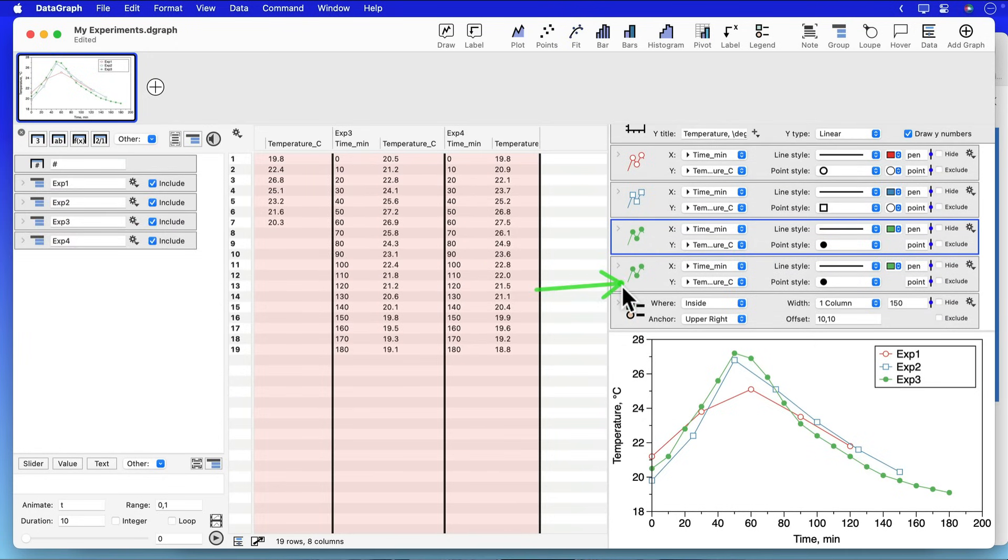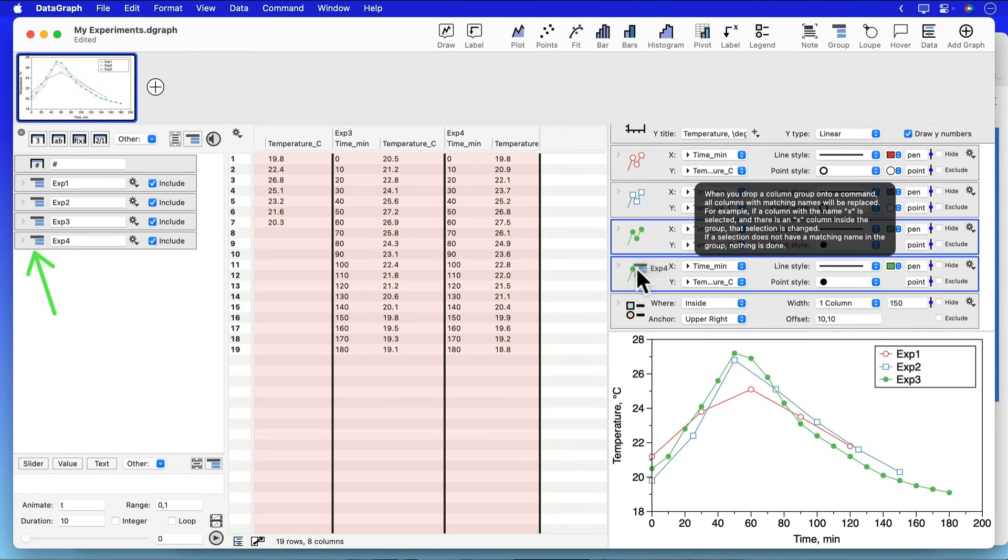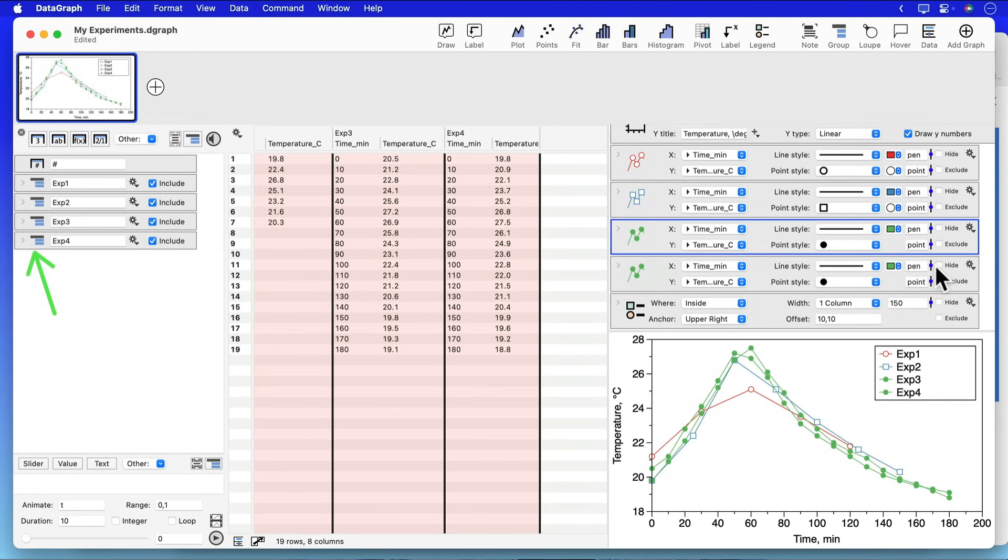Now that I have the clone all I need to do is take the group object of my additional data set that I added and drag and drop that right on that cloned command. I'm going to also want to update the colors or the symbols on that but it is a really quick way to add more and more data.